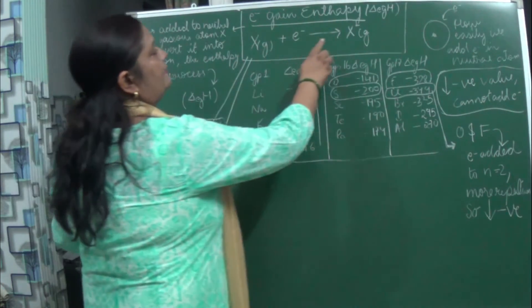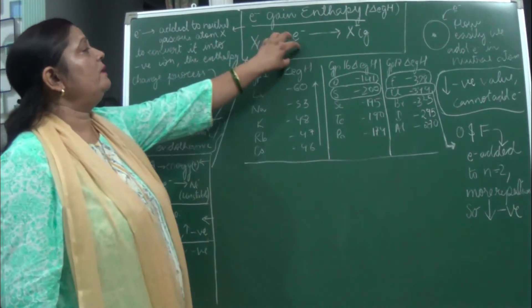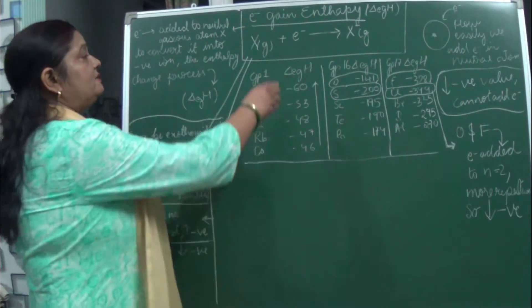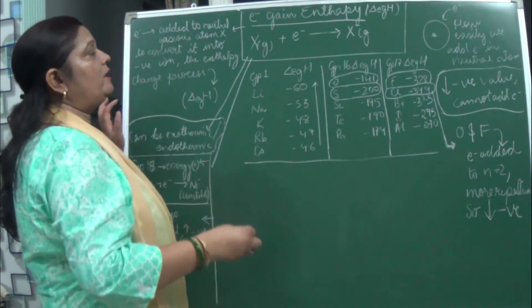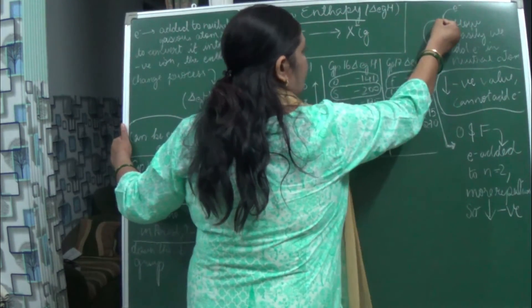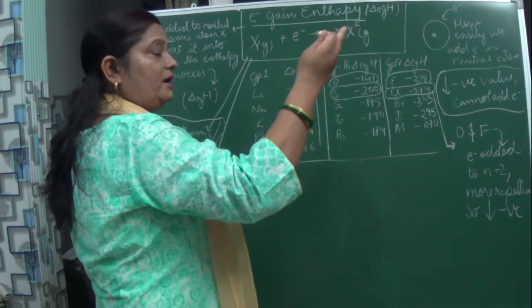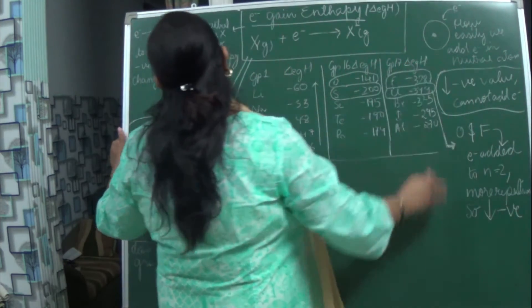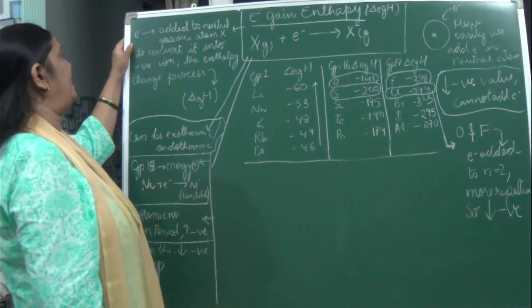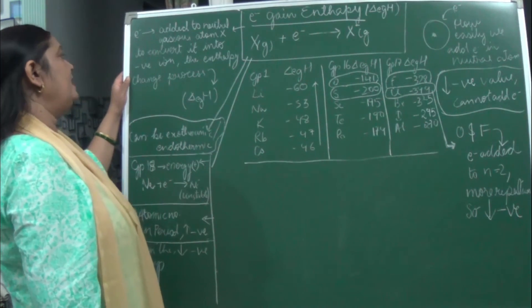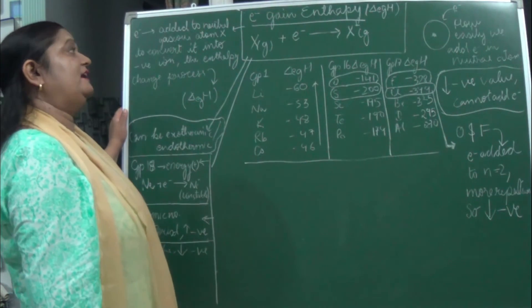Electron gain enthalpy is represented by delta EGH. Here, one electron is being added to the atom of the element, and as a result it becomes negative in charge. Unlike ionization enthalpy where an electron is removed, here an electron is added to the neutral gaseous atom to convert it into a negative ion. The change in enthalpy which takes place in this process is known as electron gain enthalpy.